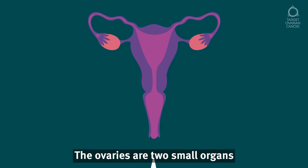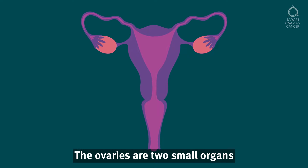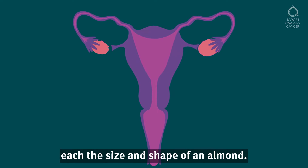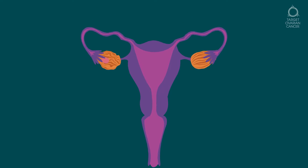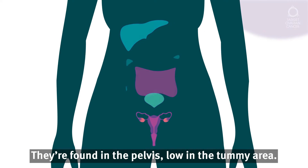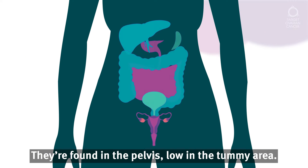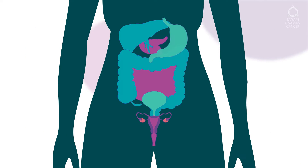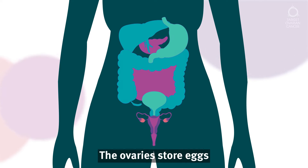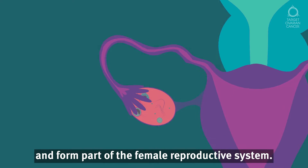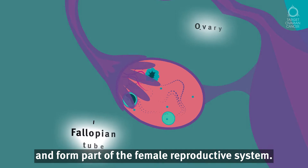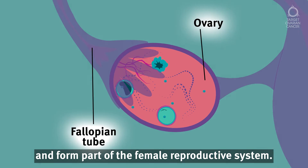The ovaries are two small organs, each the size and shape of an almond. They're found in the pelvis, low in the tummy area. The ovaries store eggs and form part of the female reproductive system.